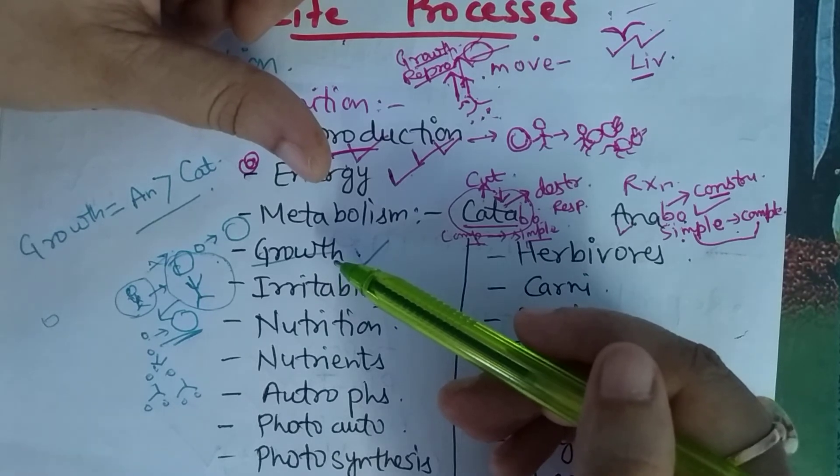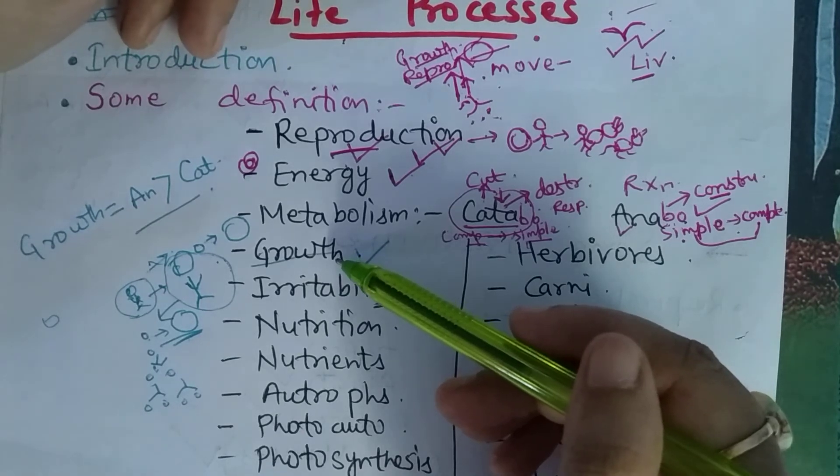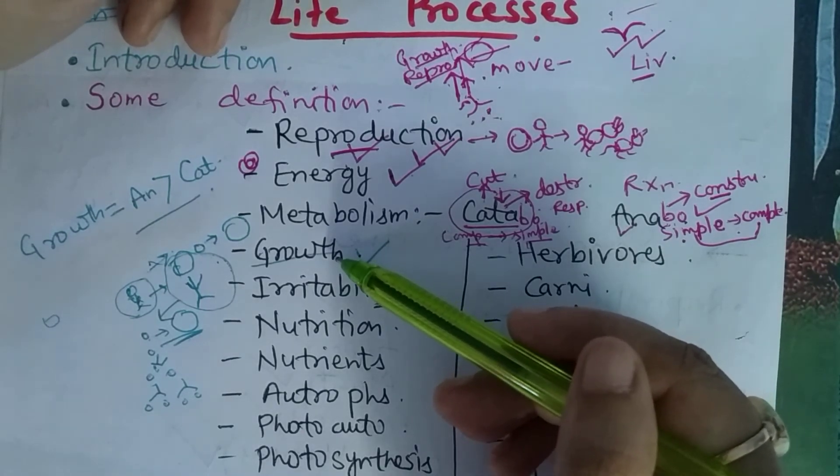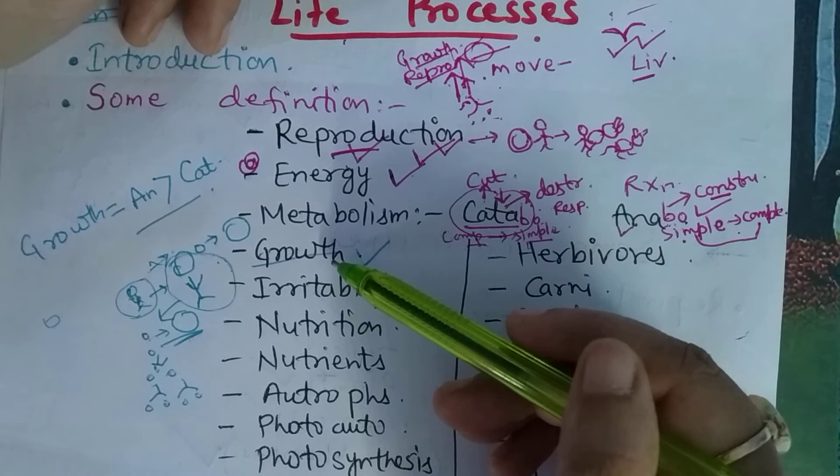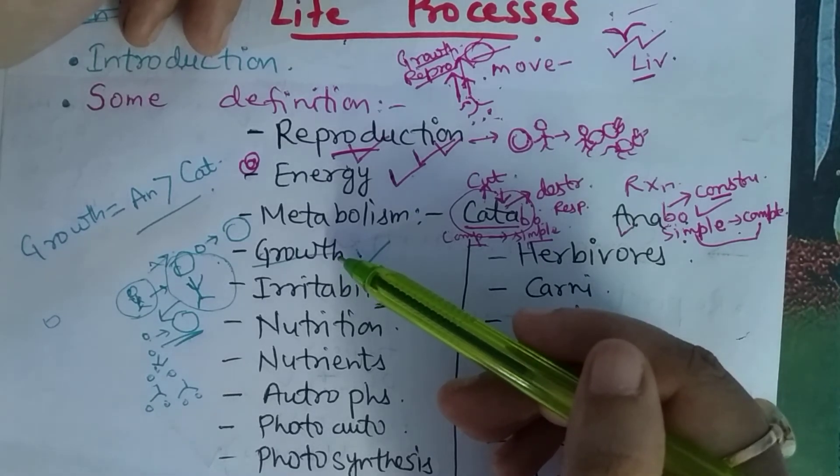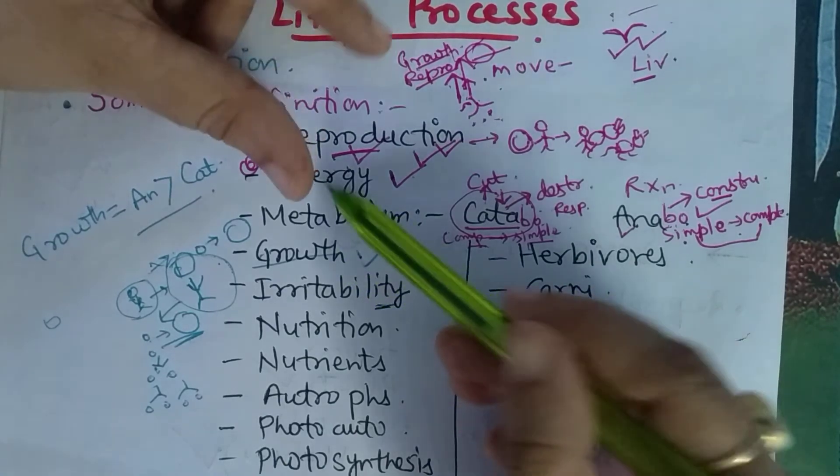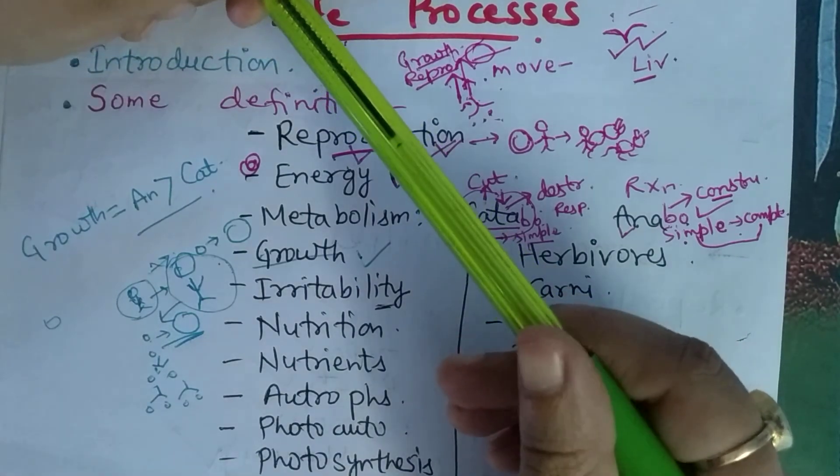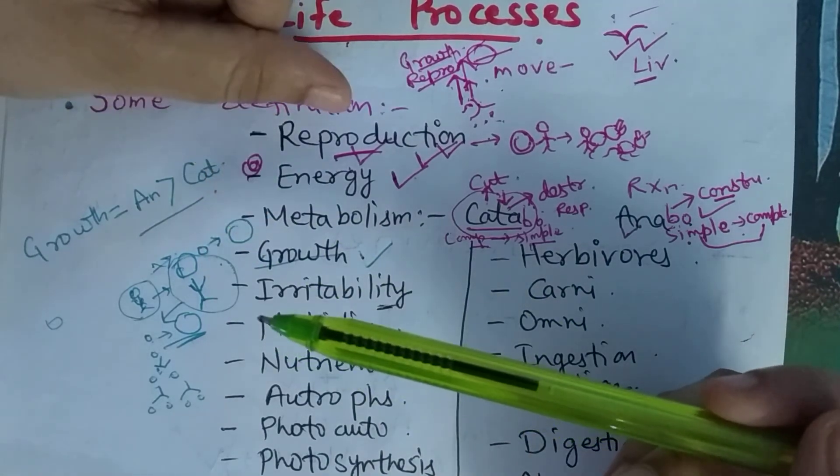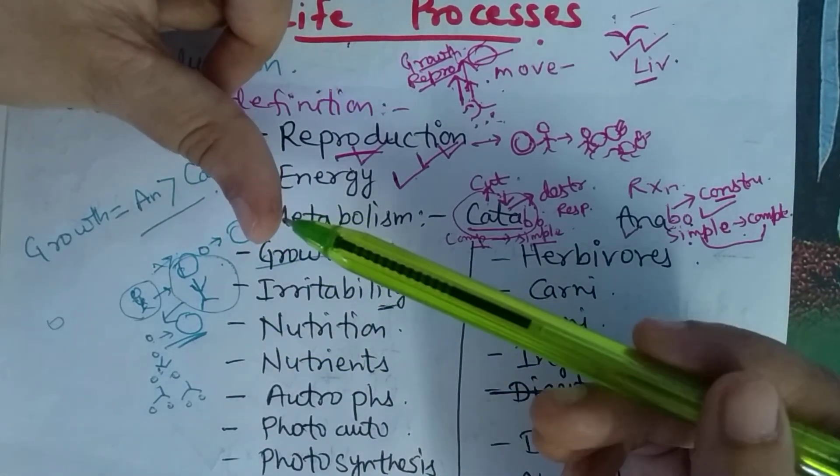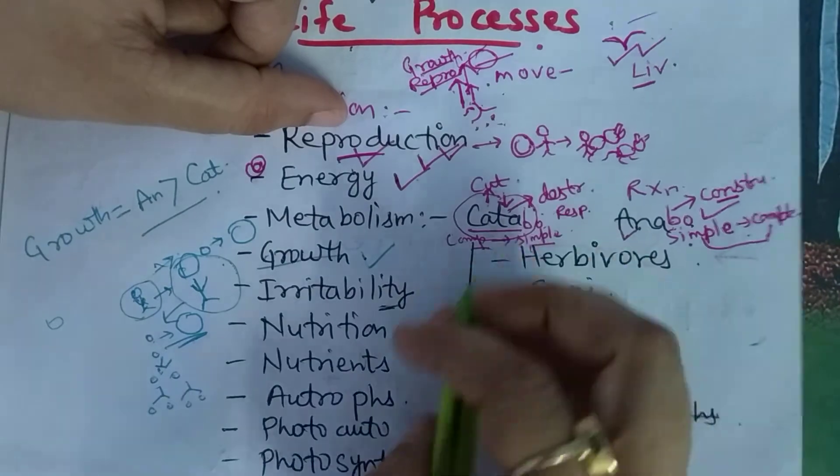For this process, we call it irritability - whatever response we show to changes in the environment. Like suppose winter season came, what response will we give? We'll take out a sweater and wear it. As soon as summer season comes, we'll put the sweater back in the box. So whatever change is coming in the environment, whatever response we are giving to it is known as irritability, also known as sensitivity. Because we can sense, we can sense that we got a cut here or a pin went in, so we give our response to it.